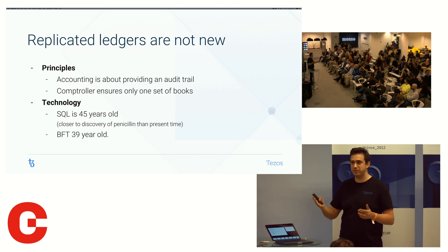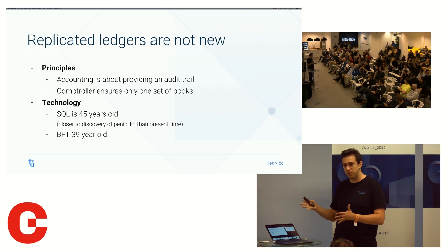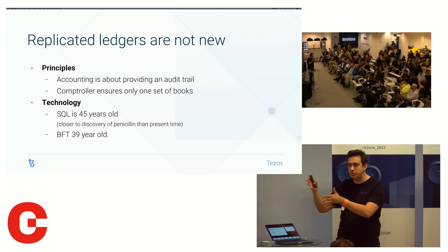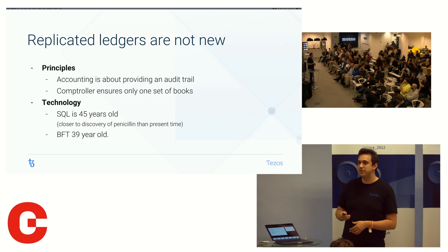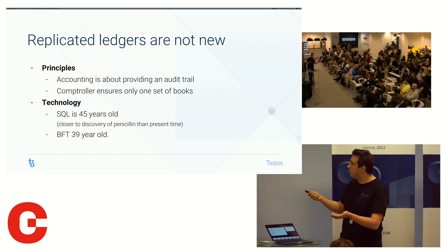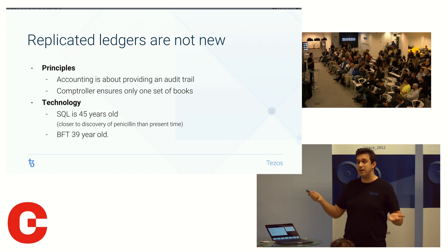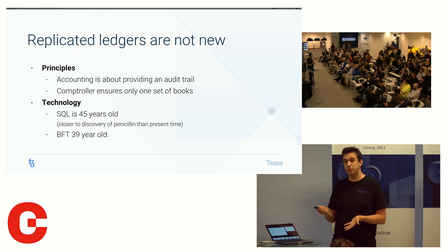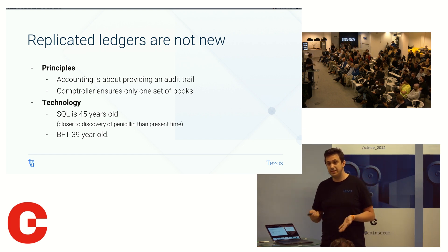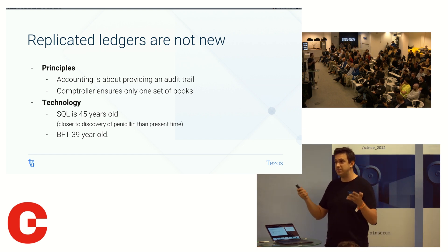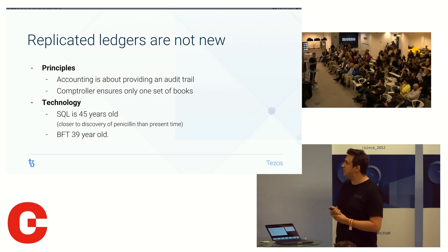Typically, if you look at the kind of schemes people pull with accounting in general, you could have two books — your internal book, which is your real book, and the book you show your auditors or your investors. That's what you want to avoid. And that's what you can do by replicating the ledger and having many people look at it and confirm that yes, we all saw the same version of the ledger — the accounts match up.